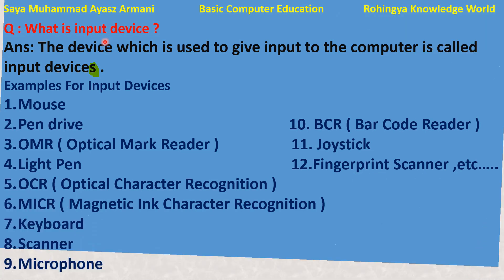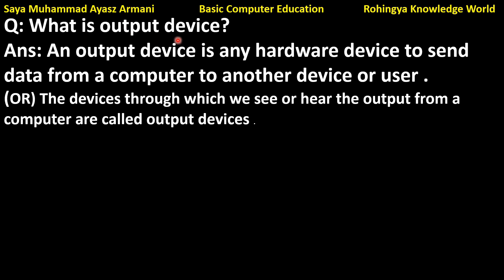Now, what is an output device? An output device is any hardware device that sends data from a computer to another computer, or to a user. It is the hardware tool that takes data or information from the computer and delivers it to the user.